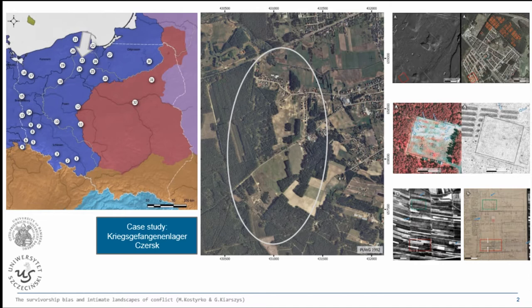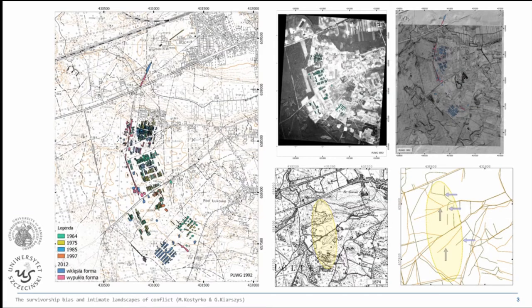Our research question was: how was the landscape built to perform the needs of the German soldiers who were keeping the prisoners here? The question was about what kind of power relations existed within this camp — where one can move, where one can't go — the performative of landscape. We were thinking about power relations and how they connected to the physical layout of the space.